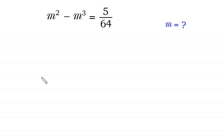Hello, welcome to how to solve this very nice cubic equation: m squared minus m cubed is equal to 5 over 64.